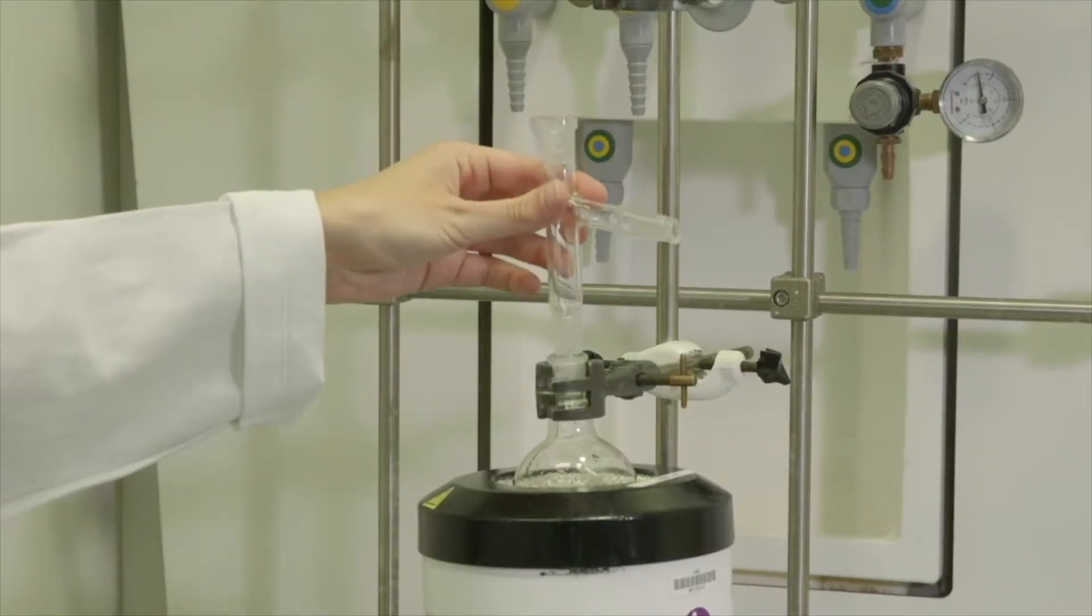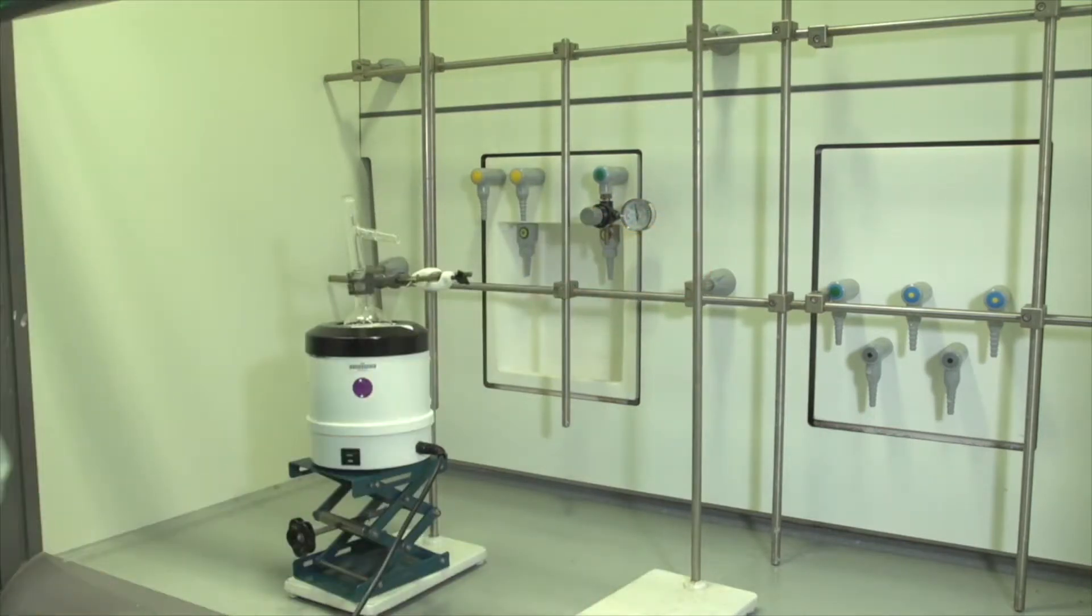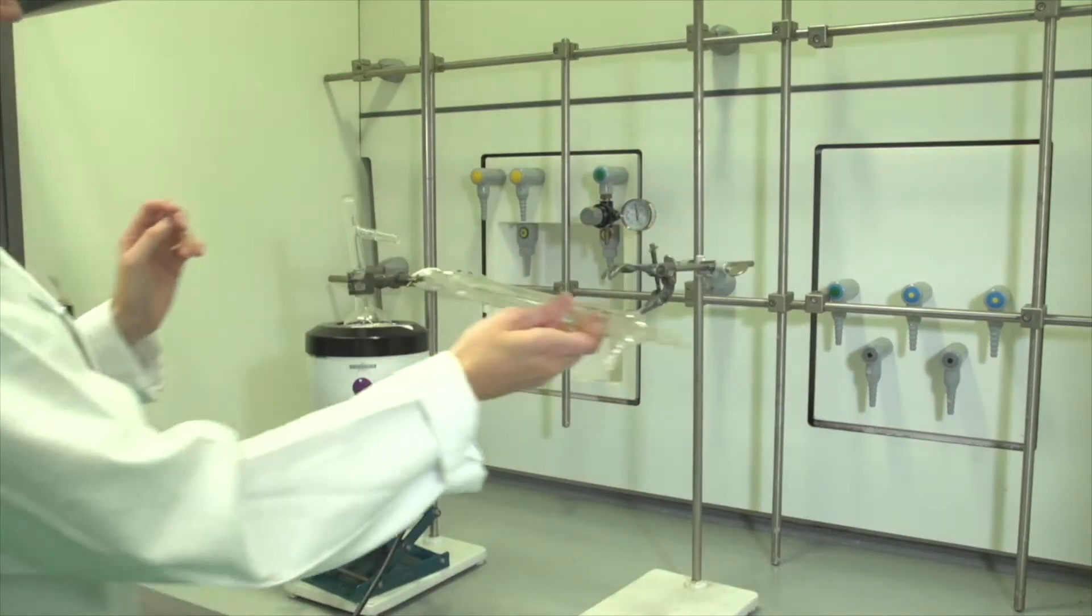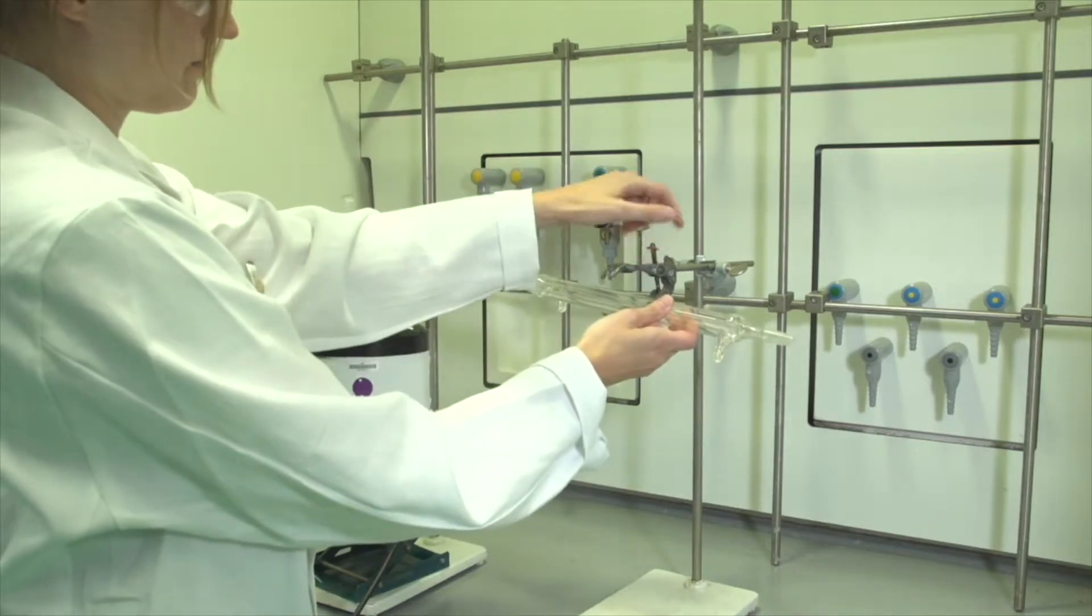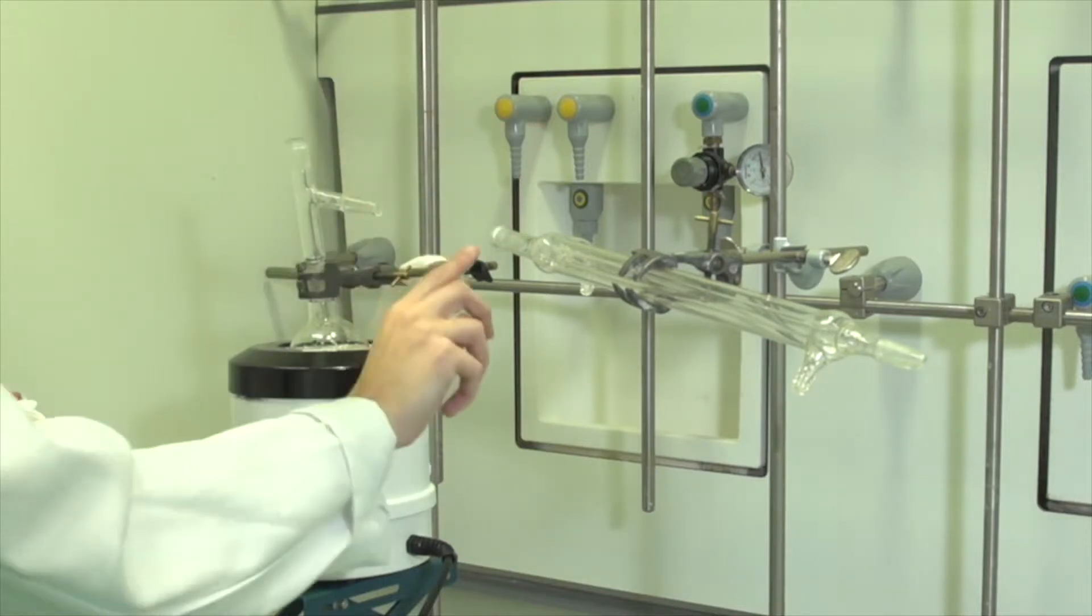Attach the distillation head to the flask. Place the second stand with the clamp attached to it. Fix the Liebig condenser onto the clamp. Grease the ends of the condenser, then attach the condenser to the distillation setup.